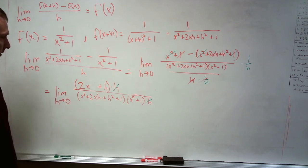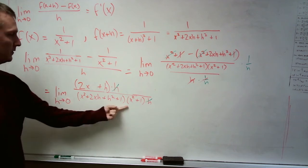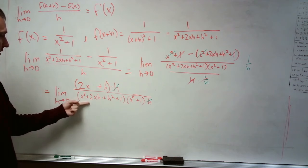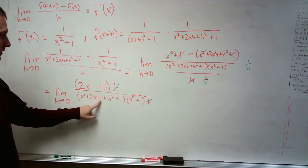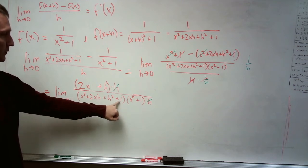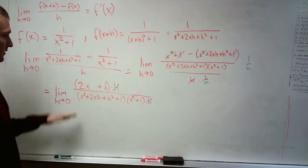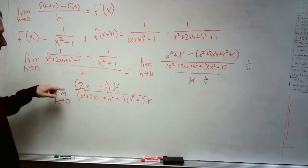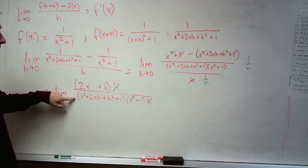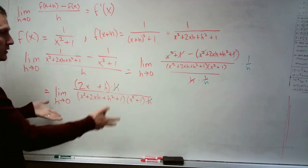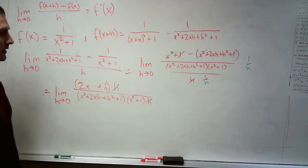How about the limit of the bottom? Can we find that by itself? Well, again, this is just a polynomial. Does it evaluate to 0 when we plug in 0? No, it's x squared plus 1 times x squared plus 1. So we can, in fact, take the limit of this divided by the limit of this, because the limit of each we can find and the limit of the denominator is not 0.